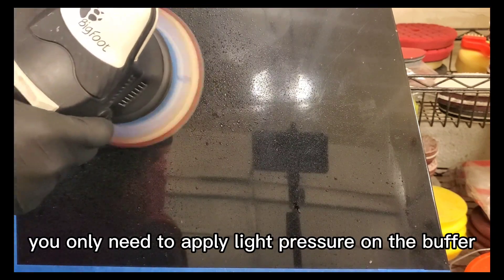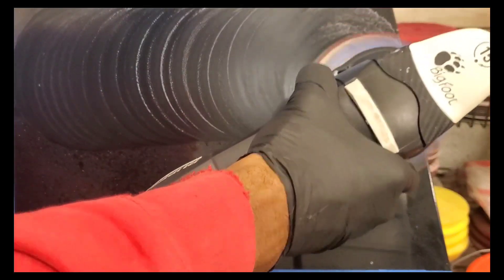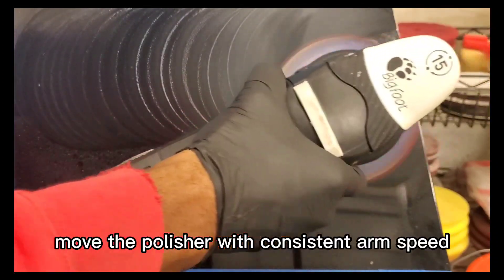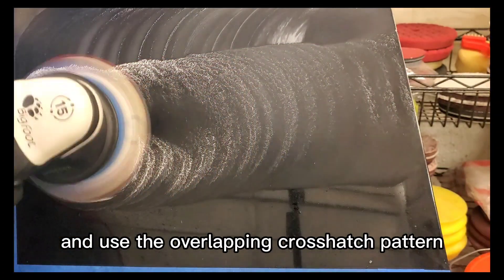You only need to apply light pressure on the buffer. Allow the sanding disc to do its job. Move the polisher with consistent arm speed and use the overlapping crosshatch pattern while cutting.